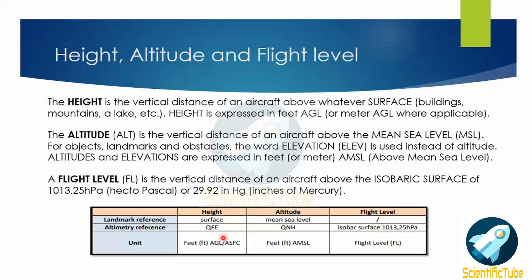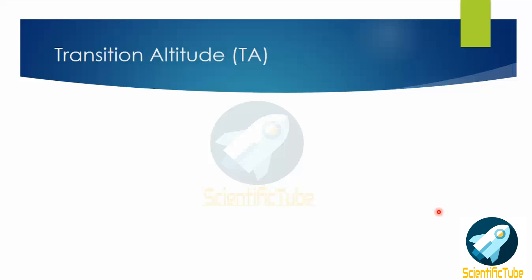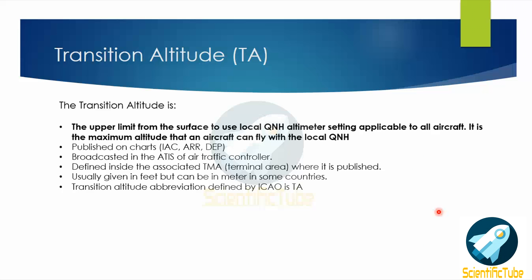Next let's speak about transition altitude. Transition altitude is the upper limit from the surface to use the local QNH altimeter setting, applicable to all aircraft. It is also defined as the maximum altitude an aircraft can fly using the local QNH. It is published in charts, always broadcasted in the ATIS, defined inside the associated terminal maneuvering area (TMA), and is usually given in feet. The ICAO abbreviation for transition altitude is TA.